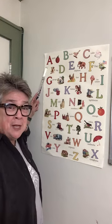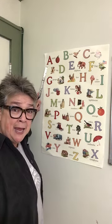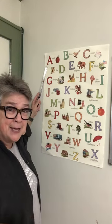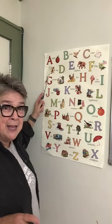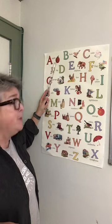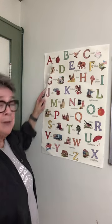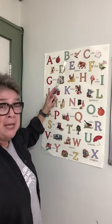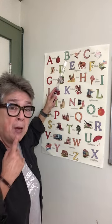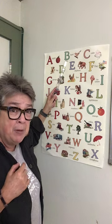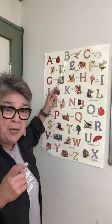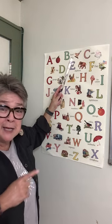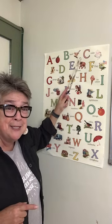First letter of the alphabet is A. A makes the A sound, like an apple. Apple. Got it? Then we have B. B as in bird.